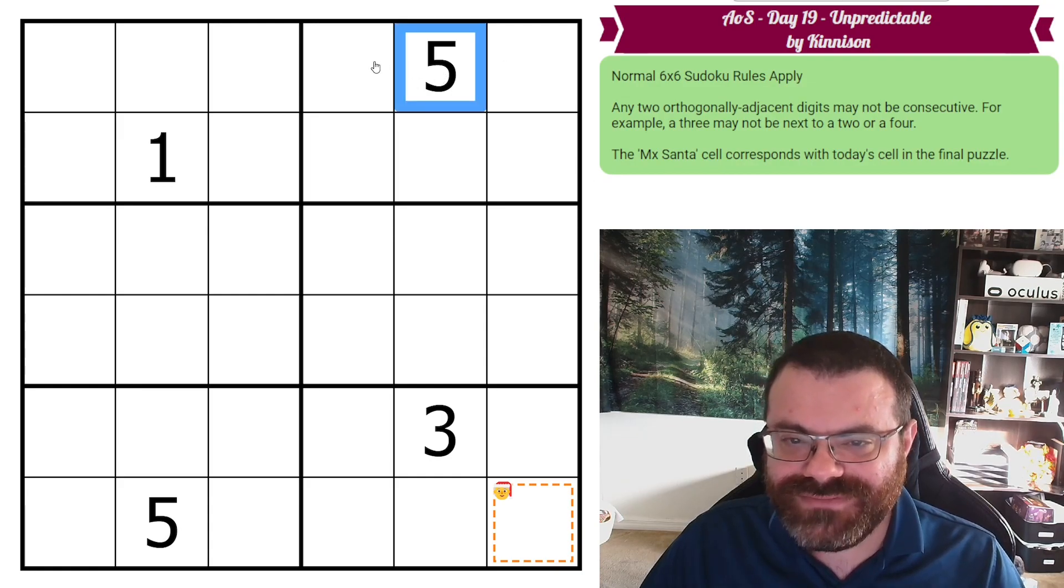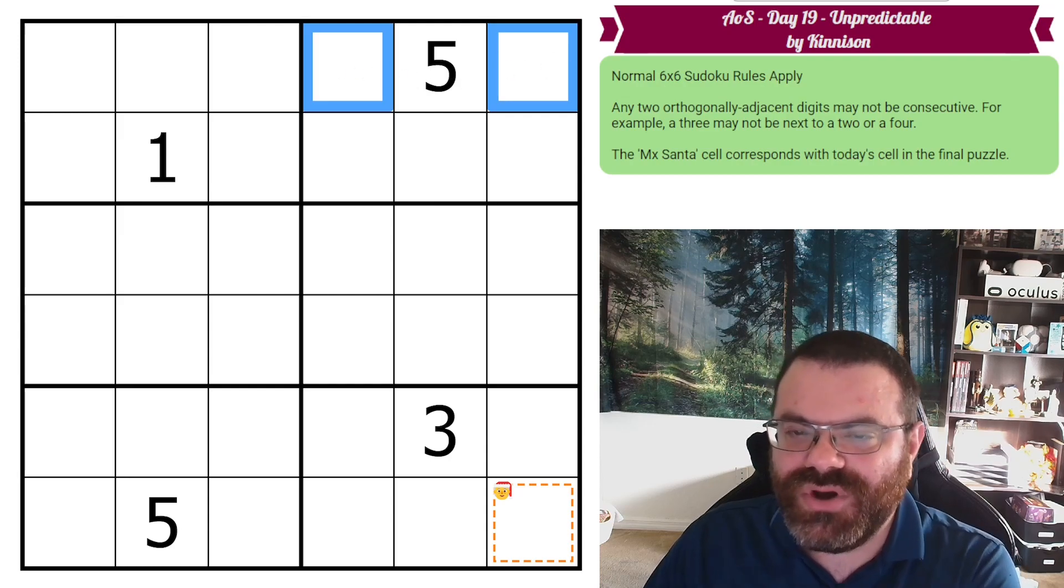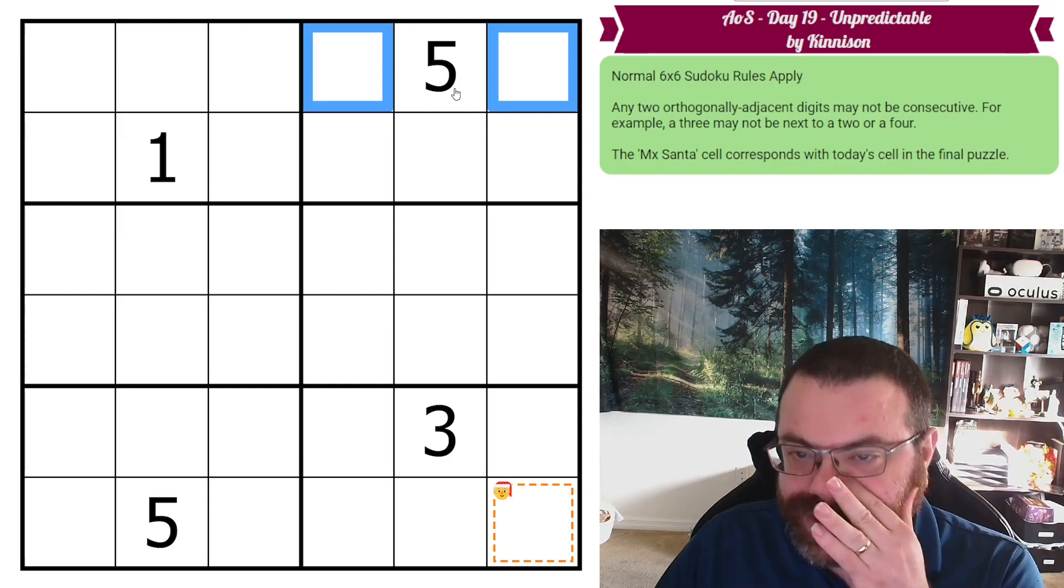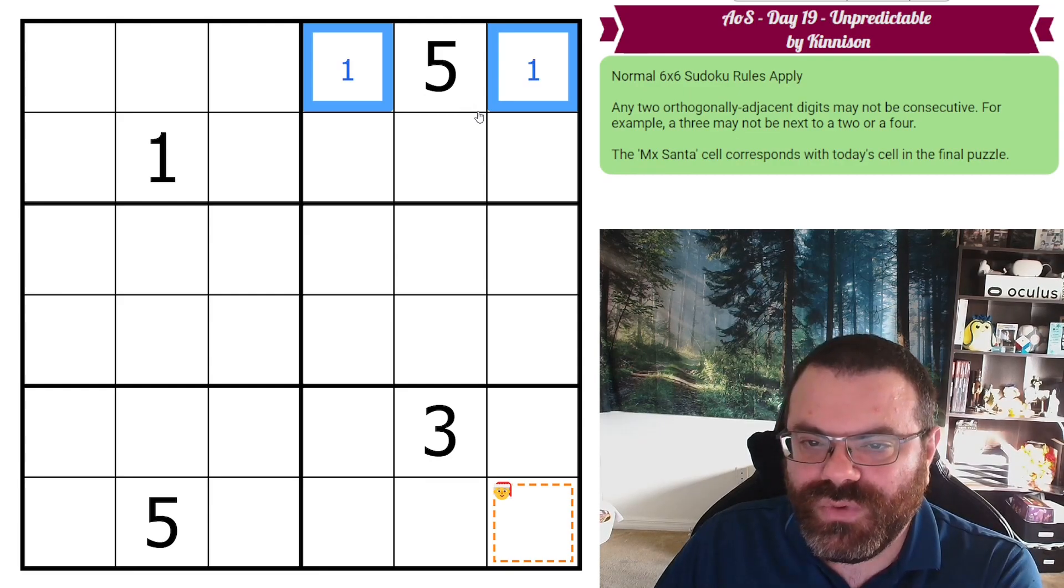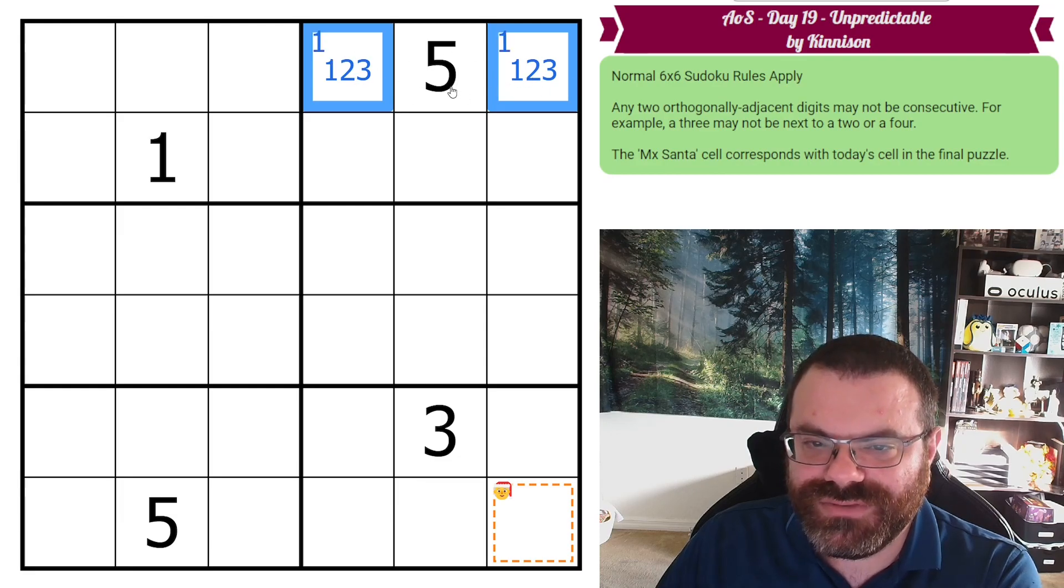So this 5, of course, is interesting because it restricts 4 and 6 from being next to it. So we know that the only other digits that could go here would be 1. We know there's a 1 up here, but along with the 1, there's going to be either a 2, a 3, there can't be 4, 5, or 6. So it's a 1 along with a 2 or a 3.